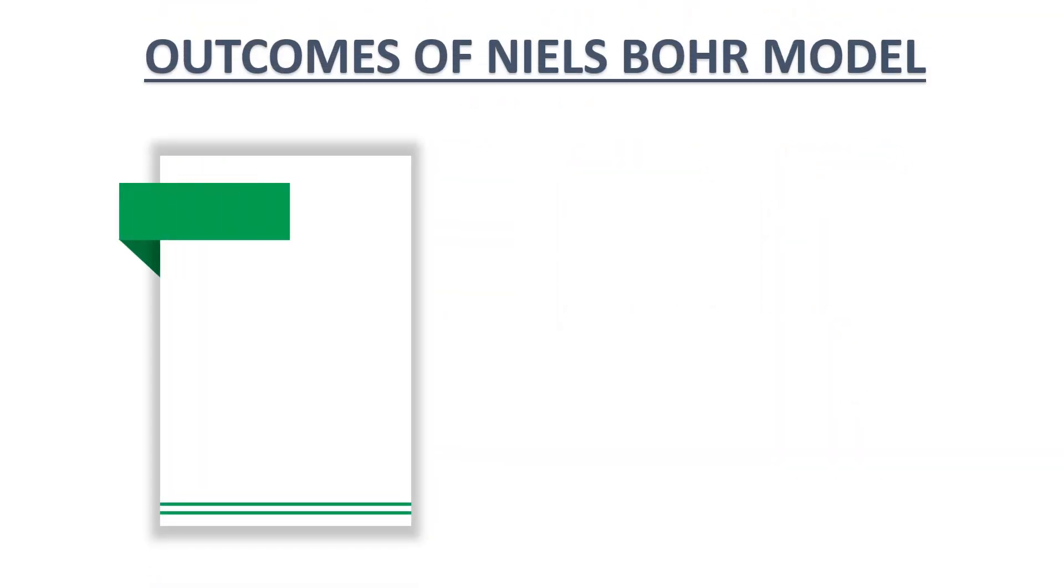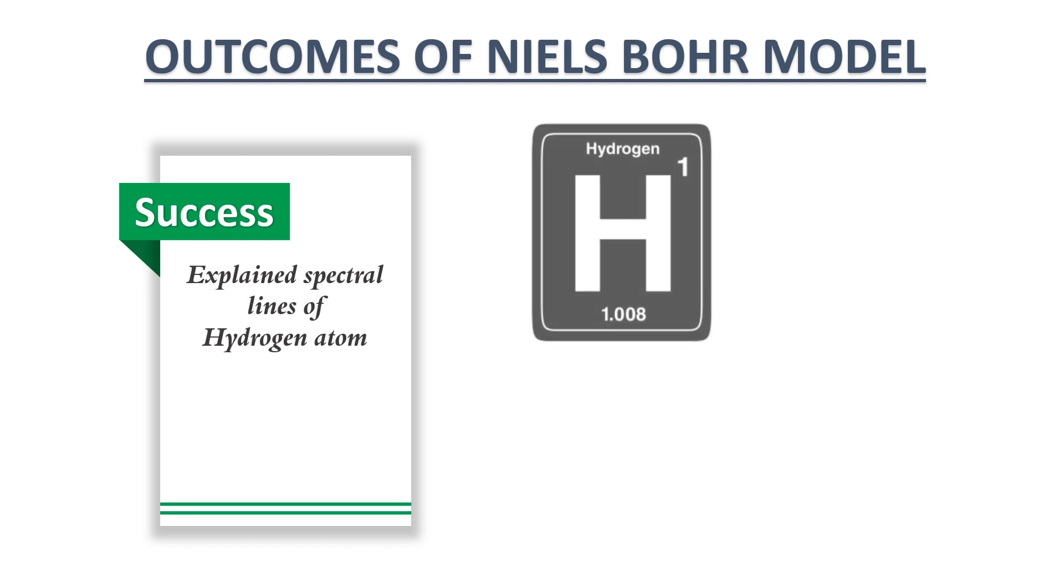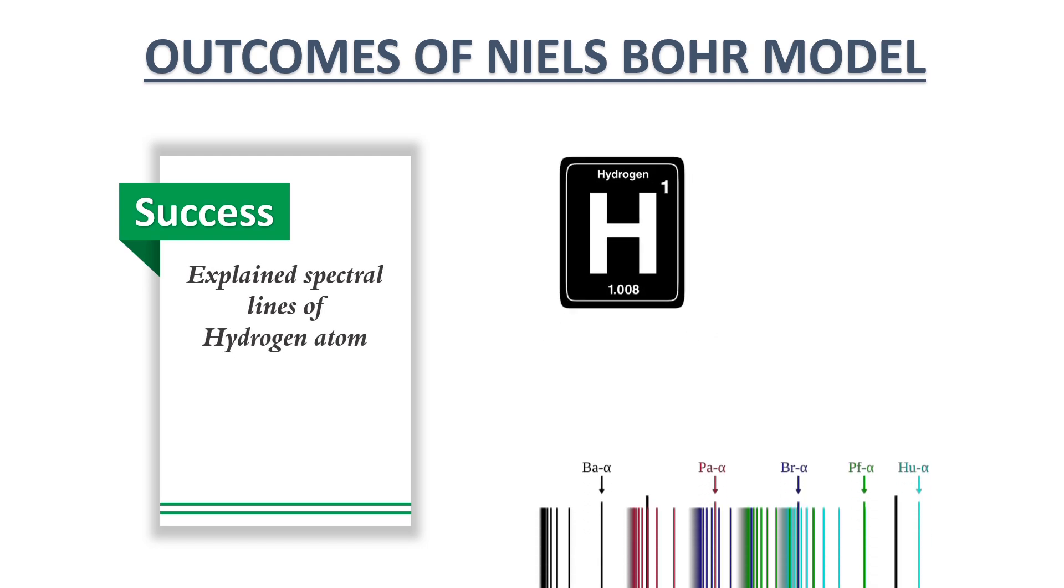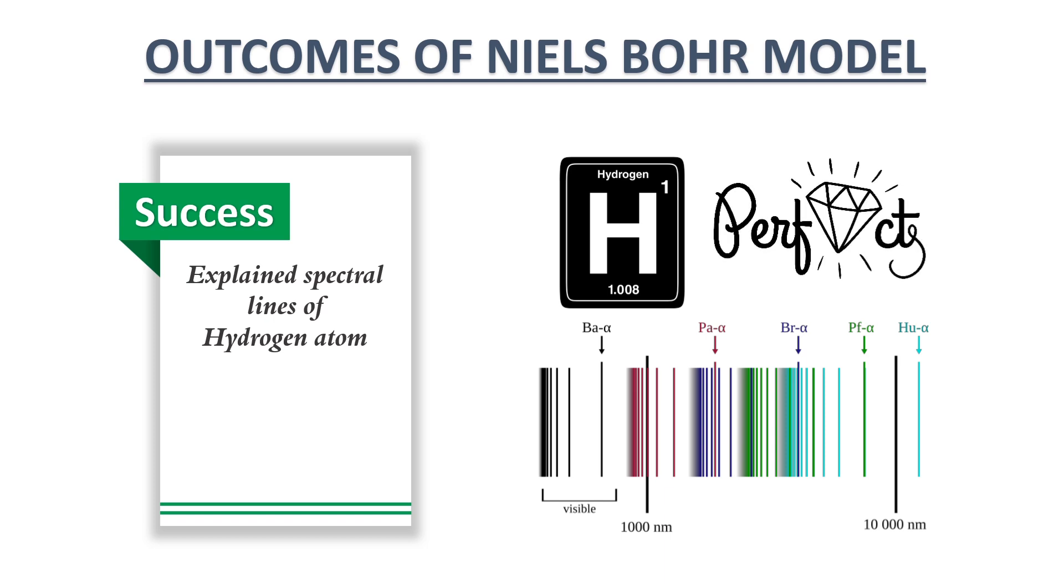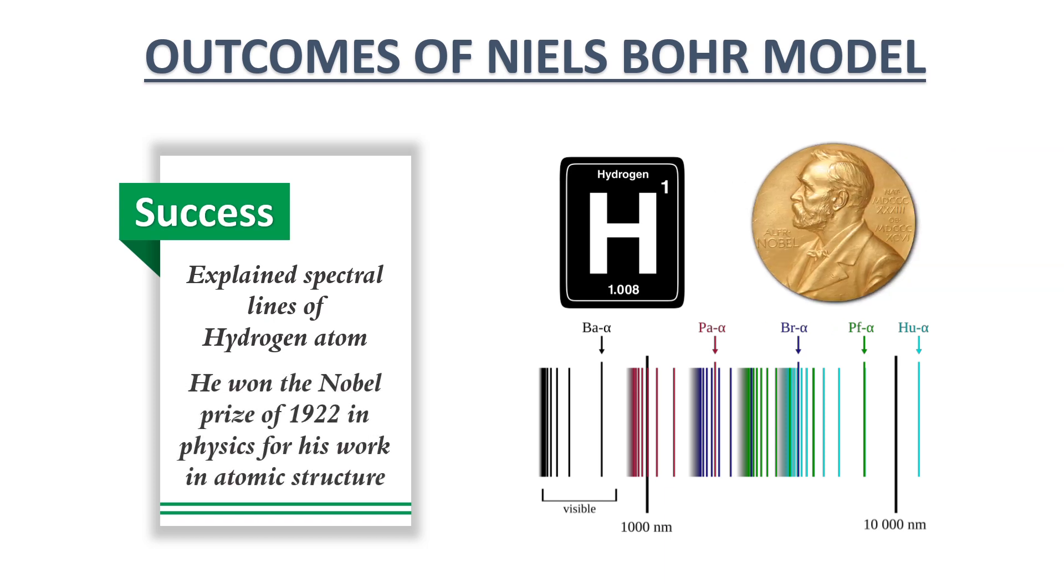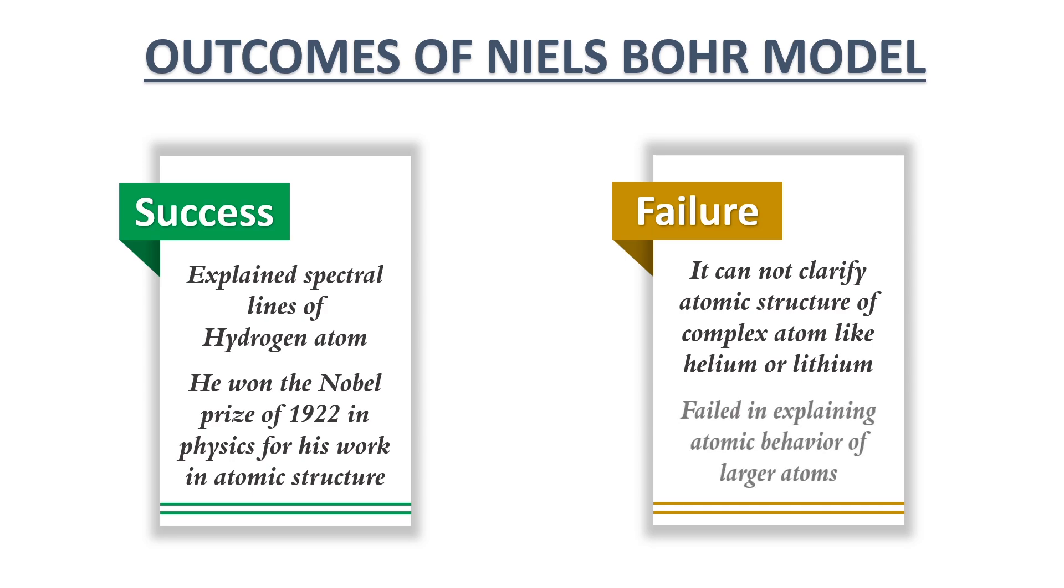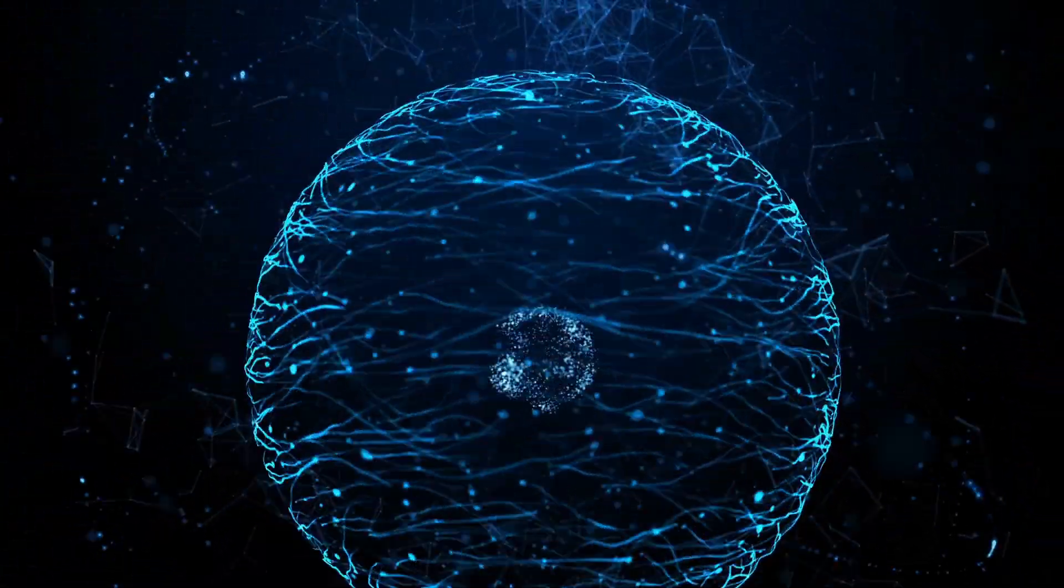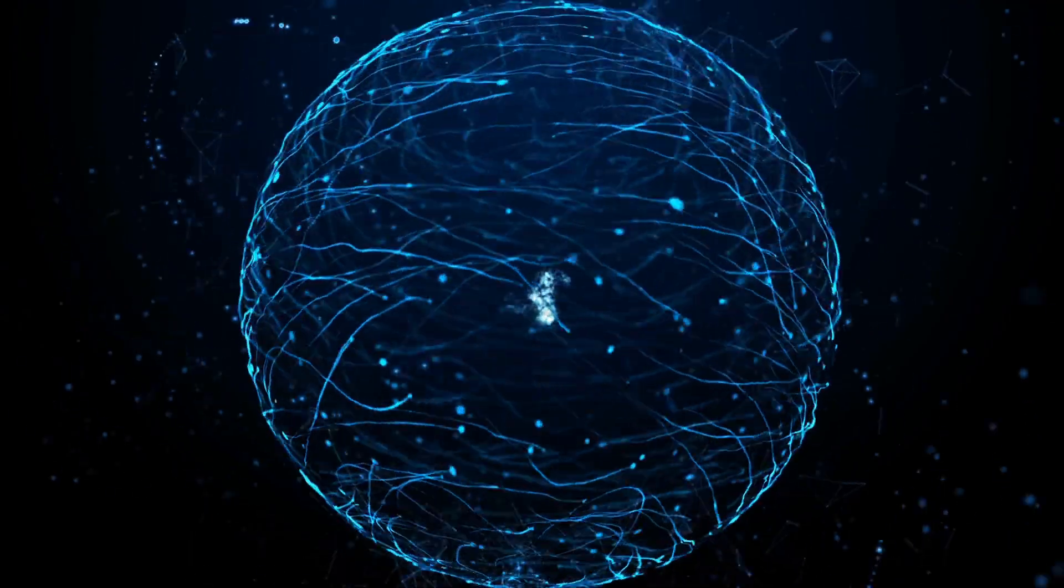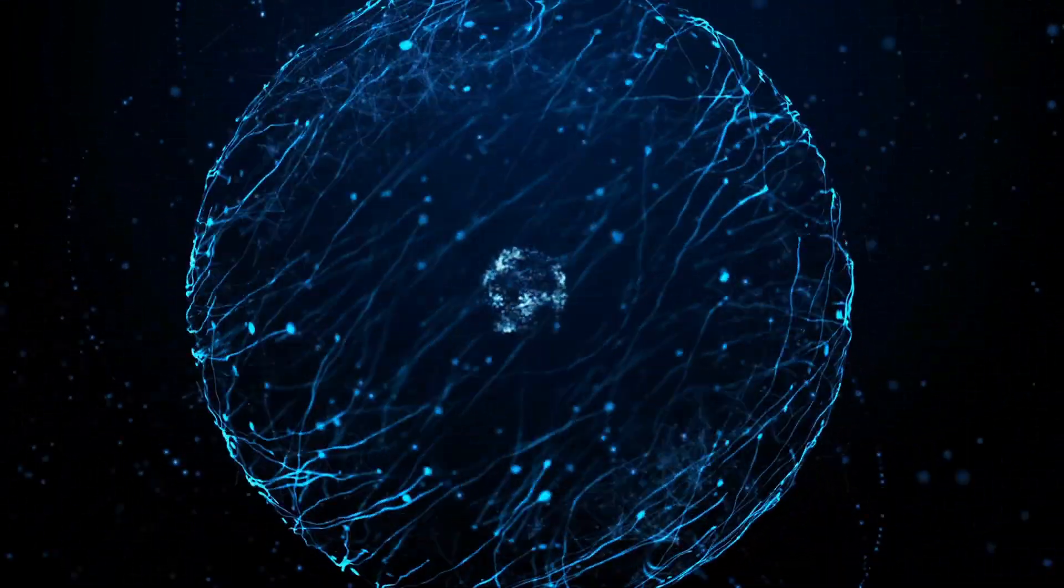Bohr's model was a massive success. It helped explain the hydrogen atom and its spectral lines. In fact, it worked perfectly for hydrogen, and he won the Nobel Prize in Physics in 1922 for his work in understanding atomic structure. However, here's the twist: Bohr's model worked perfectly for hydrogen, but when it came to more complex atoms like helium or lithium, the model didn't quite hold up. It couldn't explain certain finer details of atomic behavior, especially in larger atoms. While we have moved on from Bohr's model to more advanced theories of quantum mechanics, his work remained a cornerstone of atomic physics.